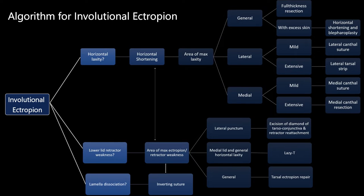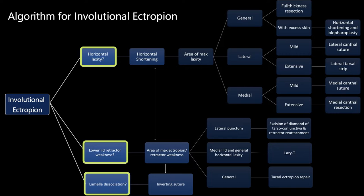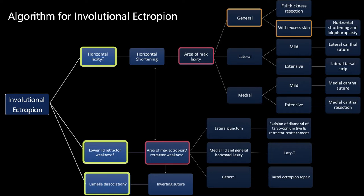This is the algorithm for involutional ectropion proposed by Collins et al. The pathogenesis can be divided into horizontal laxity, lower lid retractor weakness, and lamellar dissociation. The choice of surgery should also consider the maximum area involved.